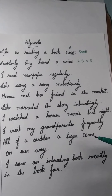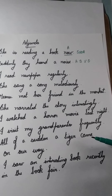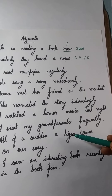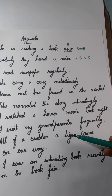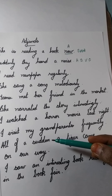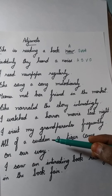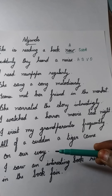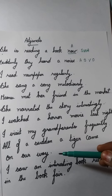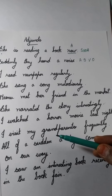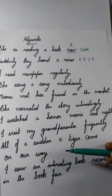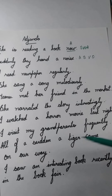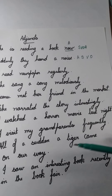All of a sudden a tiger came on our way. In this sentence, 'came' is the verb. Who does this act of coming? A tiger — so 'tiger' is the subject. When did the tiger come? It came all of a sudden, so 'all of a sudden' is an adjunct. And where did it come? It came on our way, so 'on our way' is again another adjunct. This sentence has two adjuncts: 'all of a sudden' and 'on our way'. The sentence pattern is A-S-V-A.